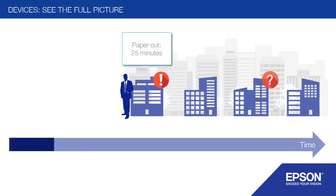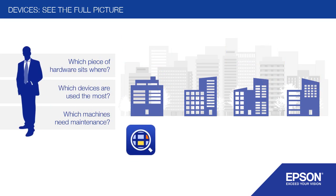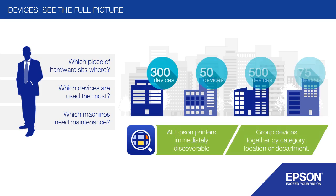Keeping track of a fleet of devices can be difficult. This is even harder if the business is spread across multiple offices, or even has multiple premises. It's hard to know exactly which piece of hardware sits where, which devices are used the most, and which machines have needed maintenance. This process becomes a long and inefficient manual task for the IT manager. But with Epson Device Admin, not only will the software discover all Epson printers immediately, but you can group printers together so that you can see everything from the big picture of your whole fleet, right the way down to buildings, floors and separate offices.